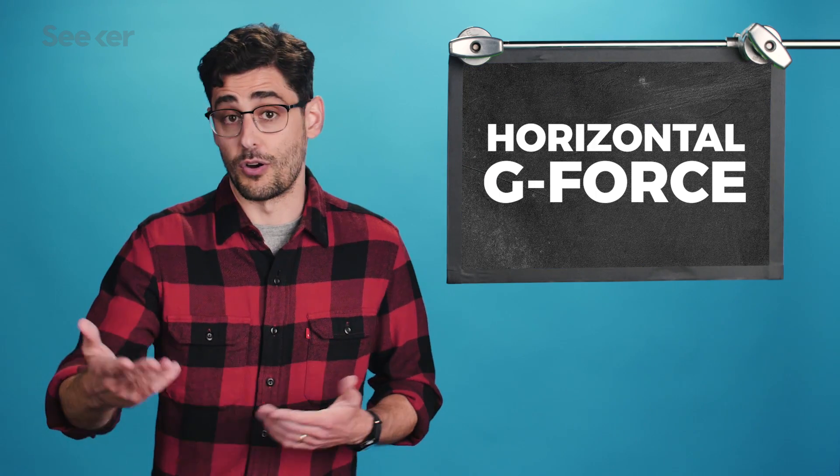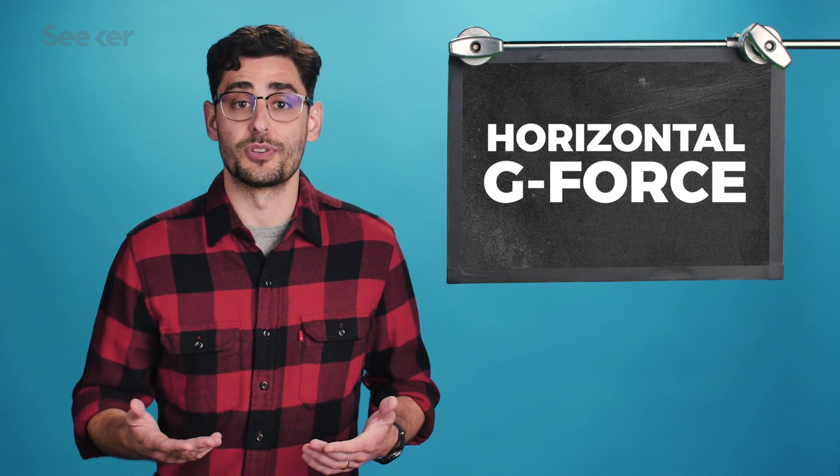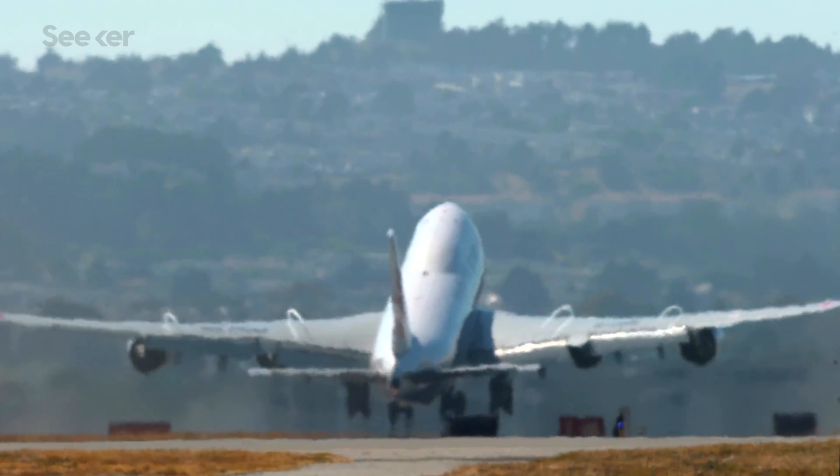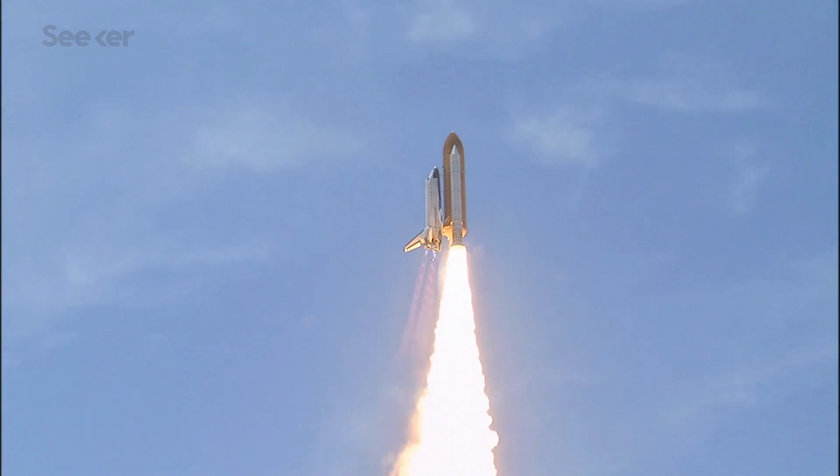We can experience g-force in different ways. If we accelerate horizontally, like in a car or train, we can experience g-force either front to back or side to side. We can actually withstand quite a bit of g-force when it's hitting us horizontally. It's when things go vertical, which mostly happens only on airplanes, roller coasters, or during space launches, that things get much more dangerous, much more quickly.